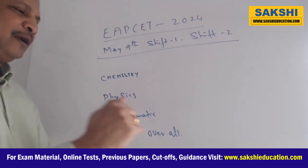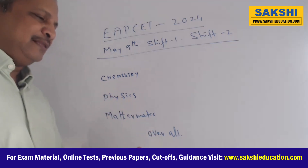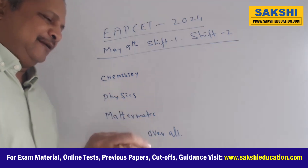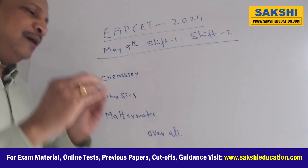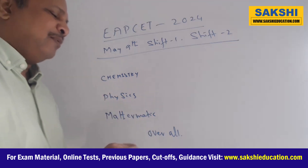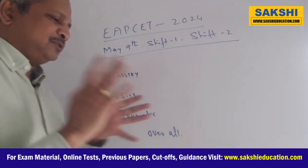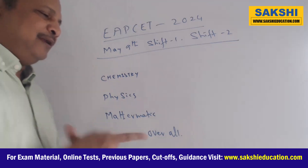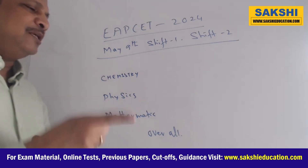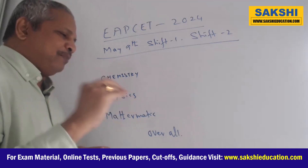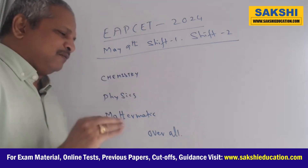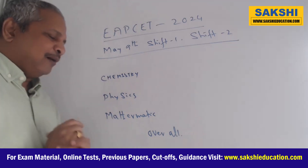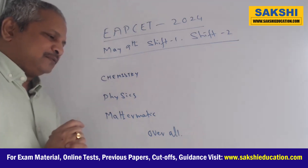So in the morning and evening shift of May 9th, physics is overall moderate. A normal average student can attempt around 20 questions easily. An IIT-oriented or JEE Mains prepared student can easily attempt 35 plus questions. That is about the physics.